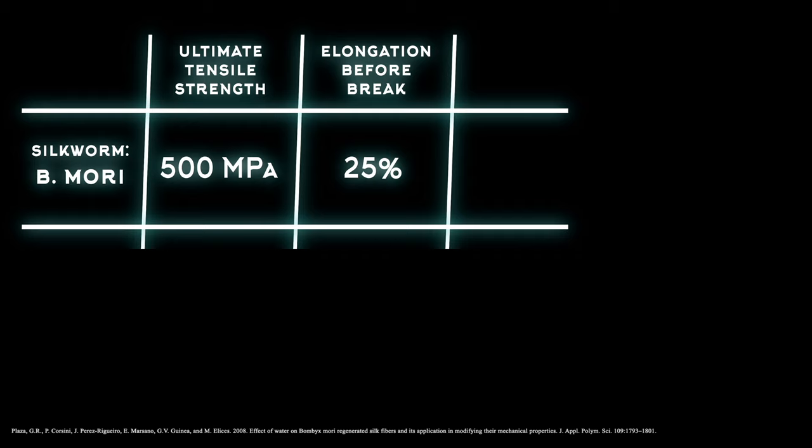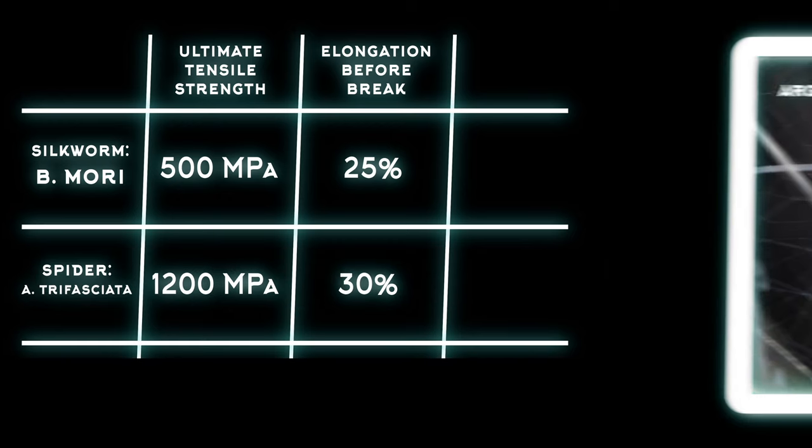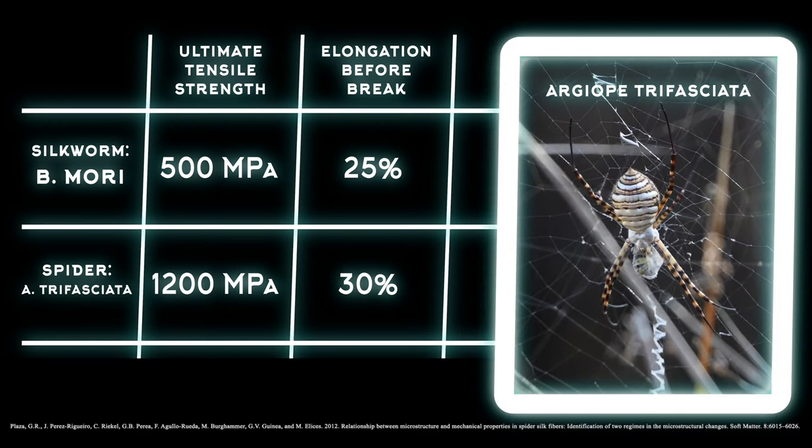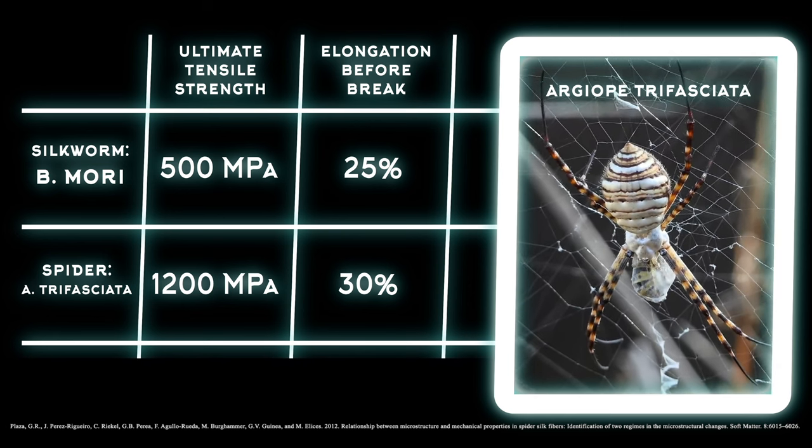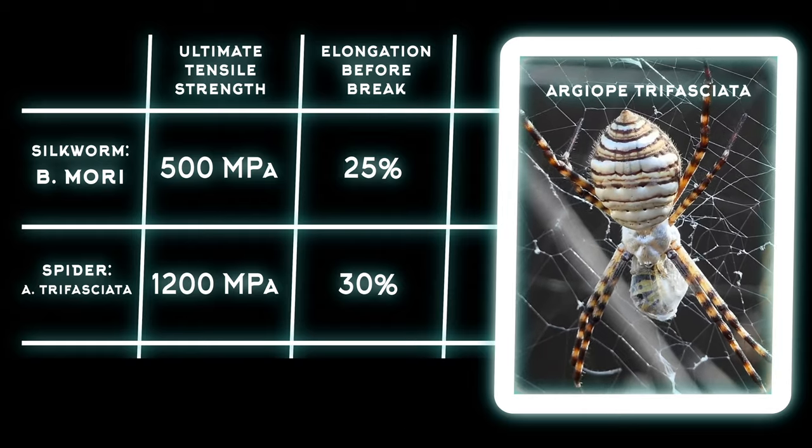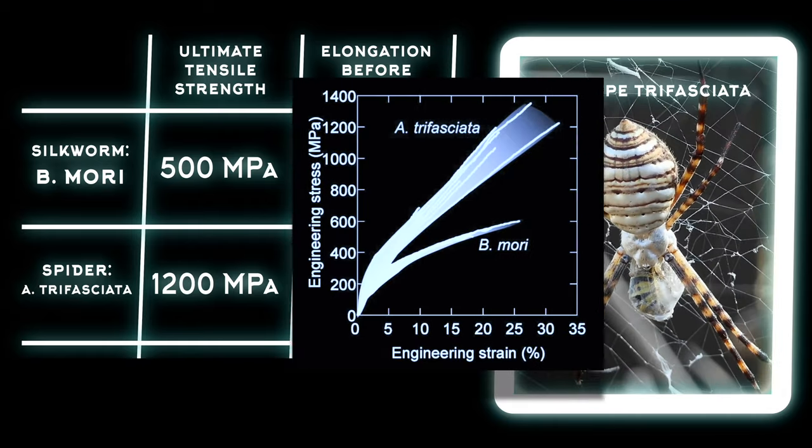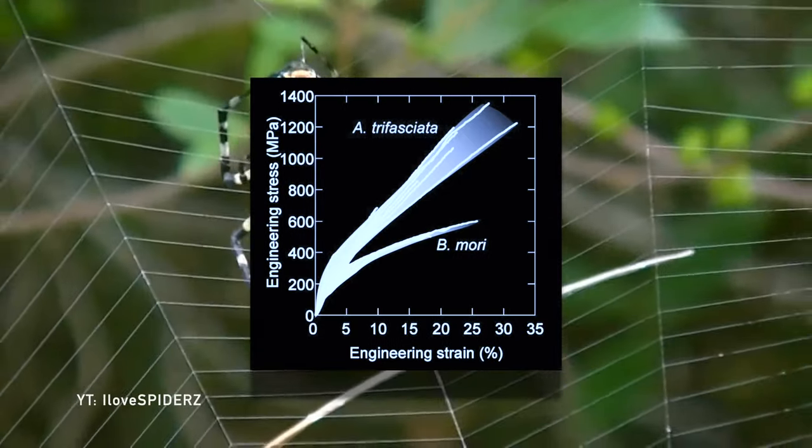and is able to stretch to 25% engineering strain before breaking. By contrast, the orb-weaving spider Argiope trifasciata has dragline silk that has been shown to exhibit tensile strengths of over 1200 megapascals, with an extension of 30%. The spider is clearly the superior spinner.